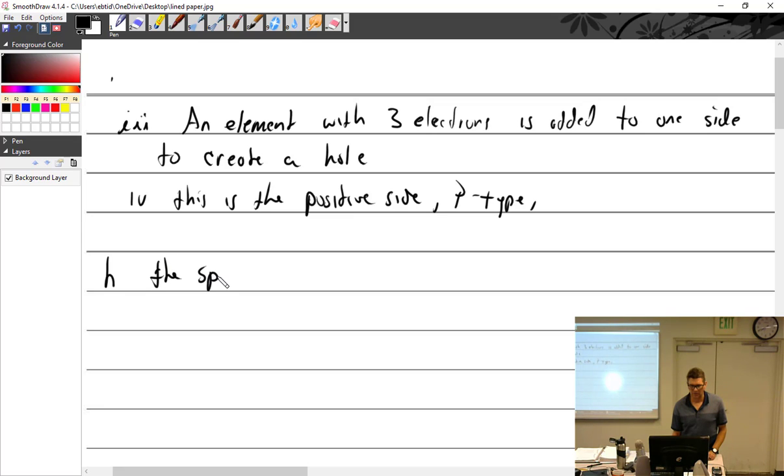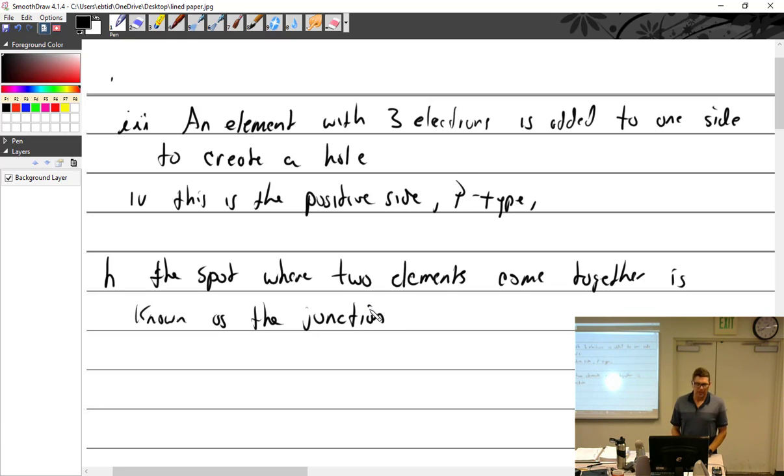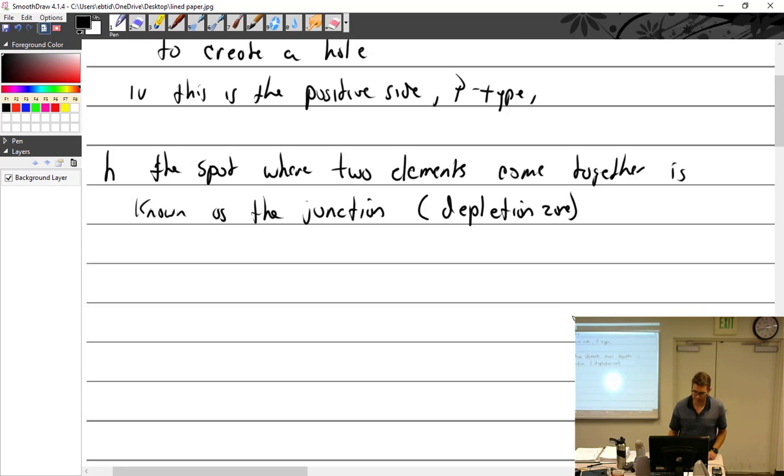That's the smiley face that was missing an electron. This is the positive side, p-type or anode. The spot where two elements come together is known as the junction. And within the junction we get the barrier, also called the depletion zone.